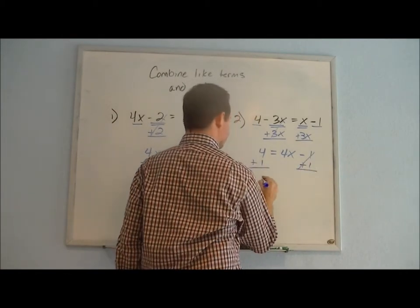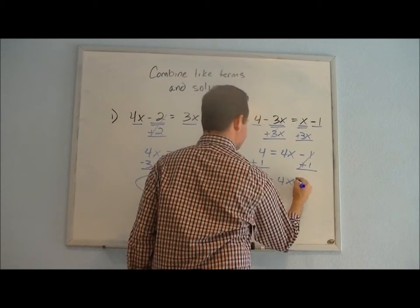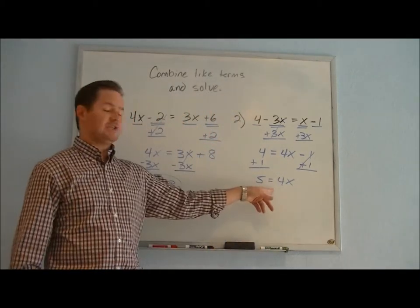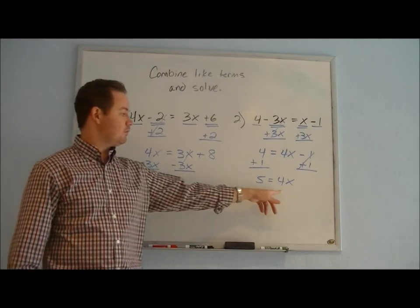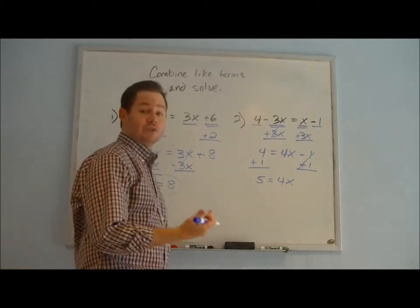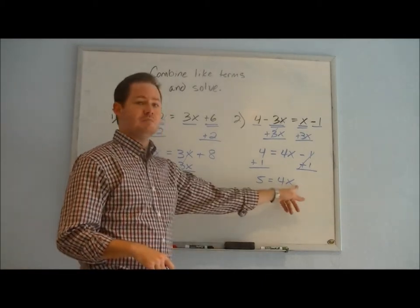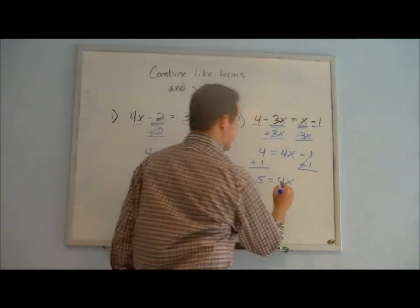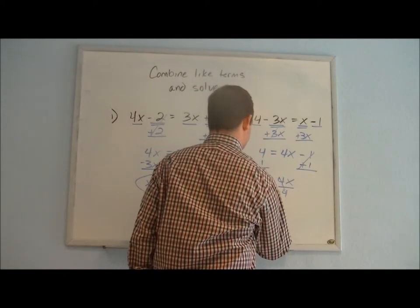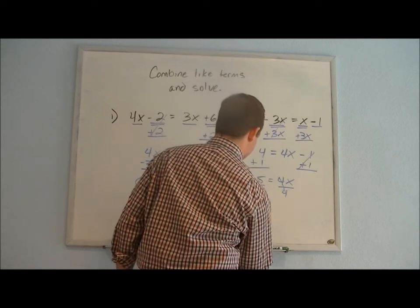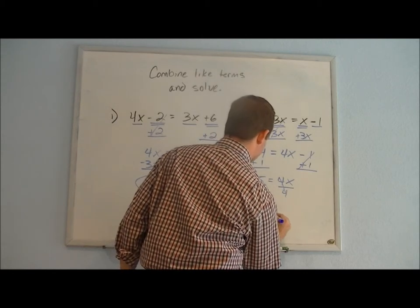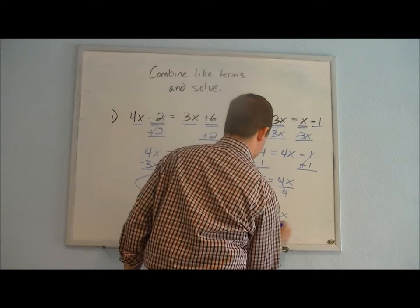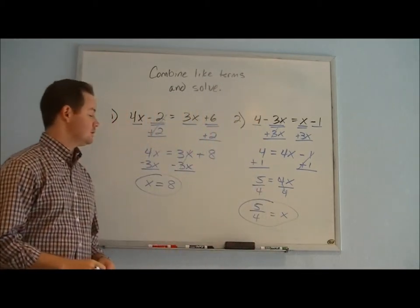Then we have one additional step here that we didn't have in the first problem, which is to get rid of that coefficient of 4. Since that's 4 times x, that means we have to divide by 4 on both sides, so we're left with 5 over 4 equals x as our solution to number 2.